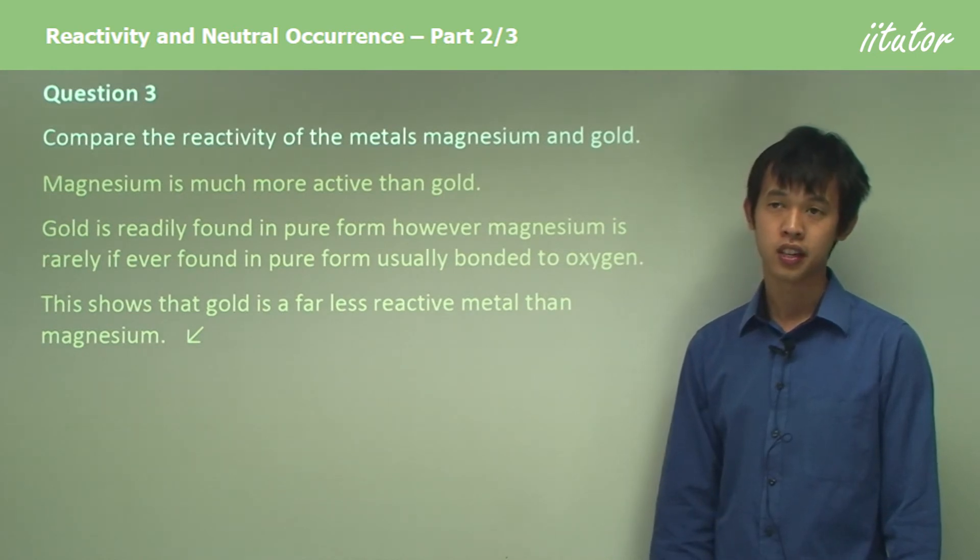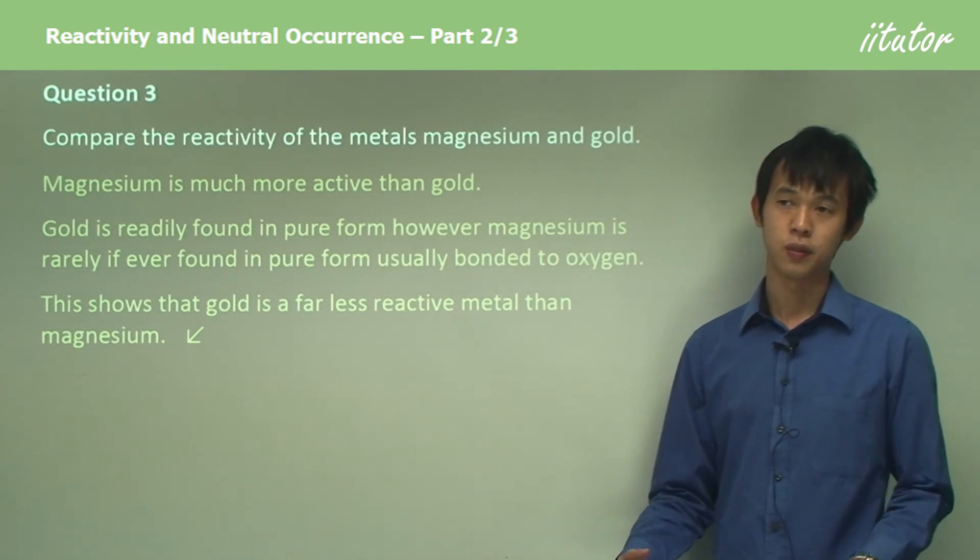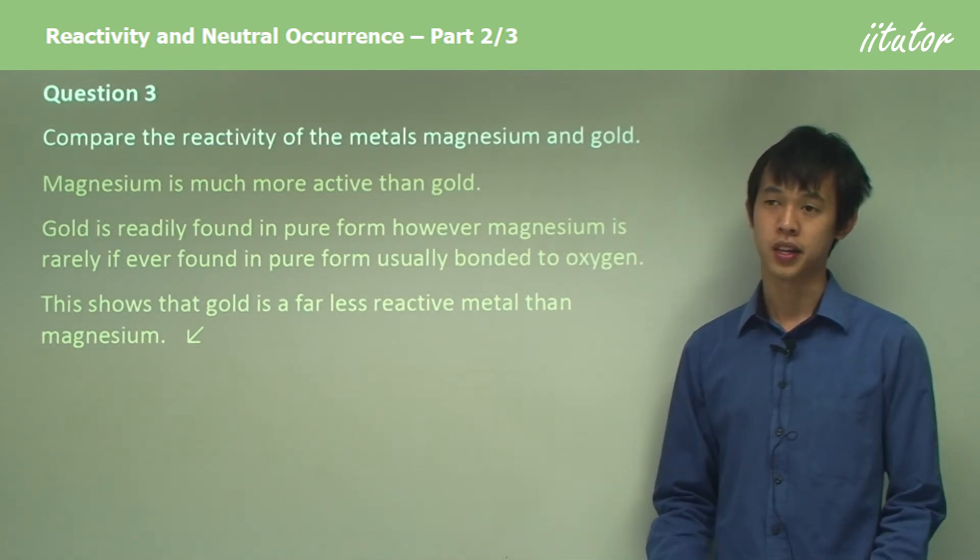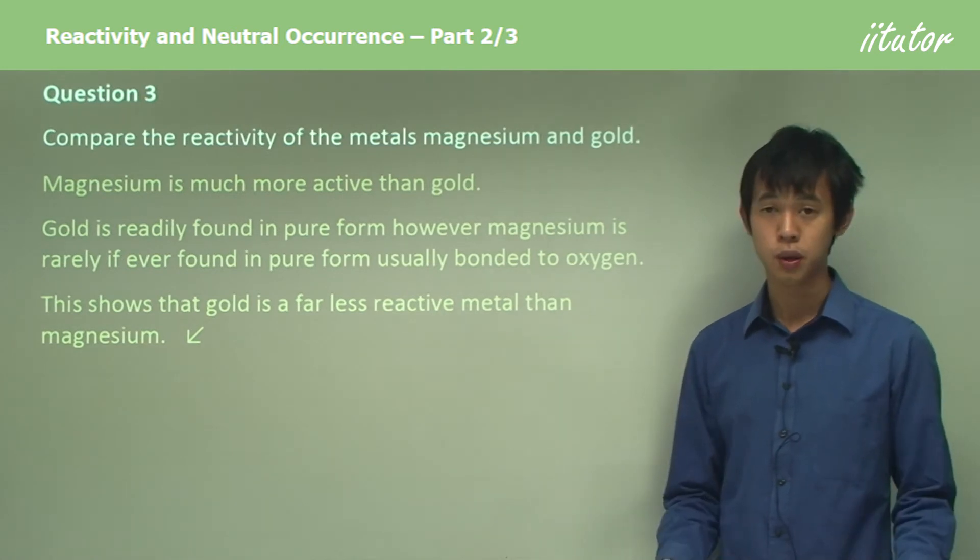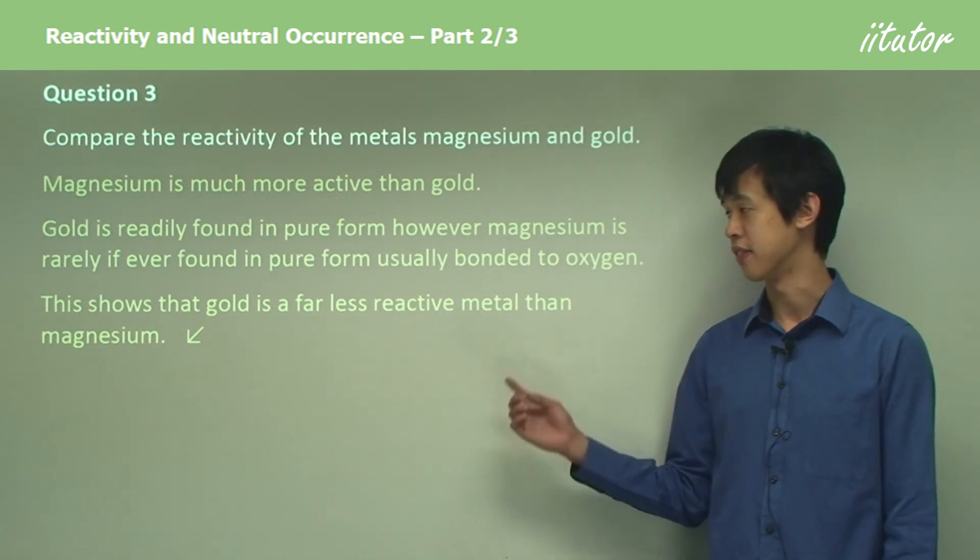Gold reacts far less than magnesium because we can find it in pure form, whereas magnesium reacts with oxygen and other chemicals to give us magnesium compounds. So we know it's much more reactive than gold.